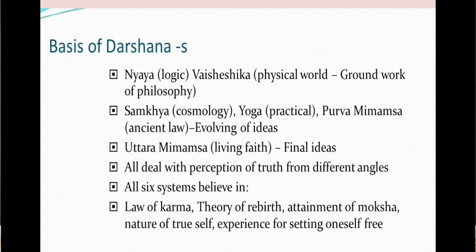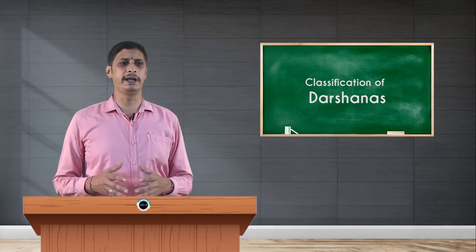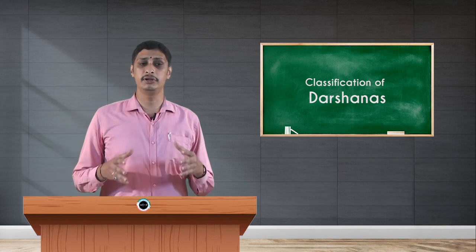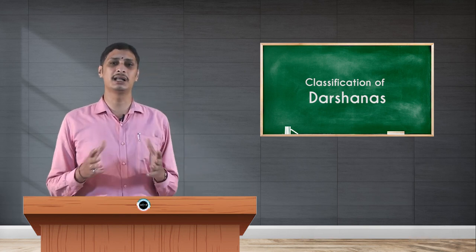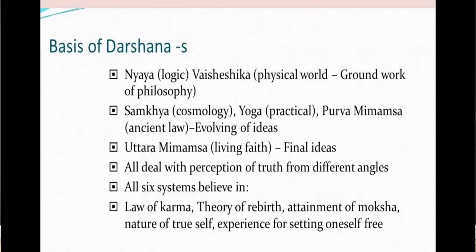Sankhya philosophy mainly talks about cosmology, and Yoga is the practical part of cosmology. Purva Mimamsa deals with ancient law and evolving ideas, and Uttara Mimamsa deals with living faith or final ideas — those are named as Vedanta. Vedanta is based on all Upanishads, and in the Prasthanatraya — Bhagavad Gita, Upanishads, and Brahma Sutras — there are 555 Brahma Sutras, named as Uttara Mimamsa, founded by Bhagavan Veda Vyasa.